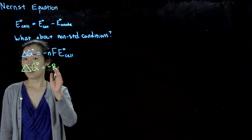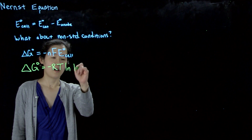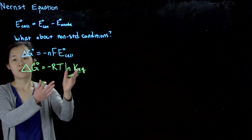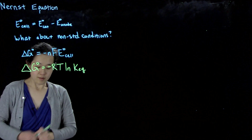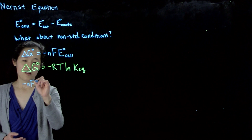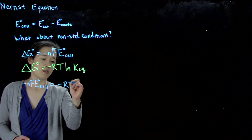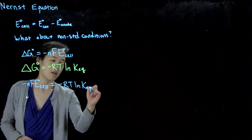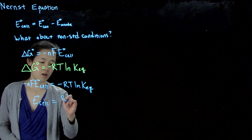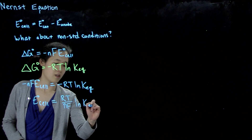Specifically, delta G-naught equals negative R — the gas constant, 8.3145 joules per mole Kelvin — times temperature in Kelvin, times the natural log of the equilibrium constant K. This is the concentration of products over reactants for the redox reaction. Because of that, we can relate these two expressions, and we know that negative NF times the standard cell potential equals the same expression with K, so we can express E°cell in terms of RT over NF times log K.